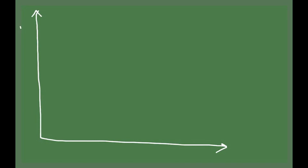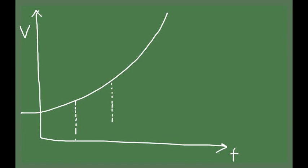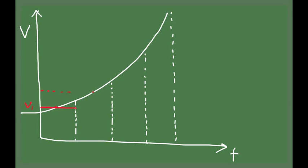What if the velocity did not have that staircase behavior, if it was actually a smooth function of time, which will be the case in a realistic situation? So how can we proceed, given a velocity like that? A possibility is to divide the time interval into slices and to approximate the velocity function by a constant line with constant velocity over each one of the intervals.